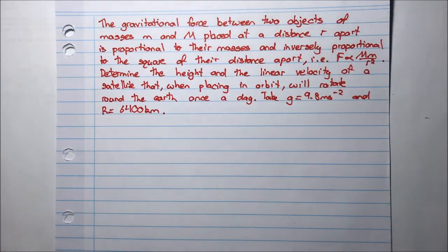The gravitational force between two objects of masses little m and capital M placed at a distance r apart is proportional to their masses and inversely proportional to the square of their distance apart.